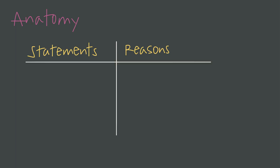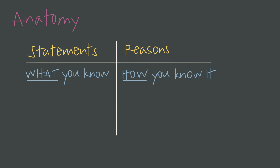What even is the structure of a proof? Let's talk anatomy. Most proofs are two-column proofs where we label the left column as statements and the right column as reasons. Everything on the left is what we know and everything on the right is how we know it. For every statement you make about what you know, you must give a corresponding reason for how you know it. You can't make a statement without a valid reason — this is the entire game.